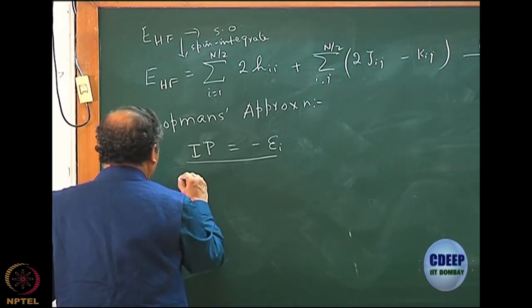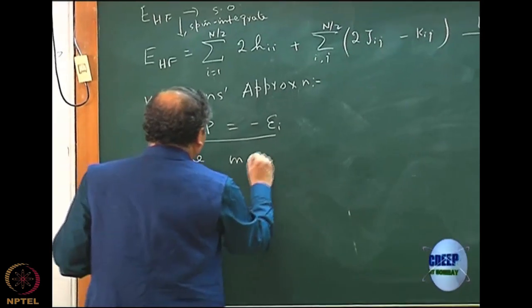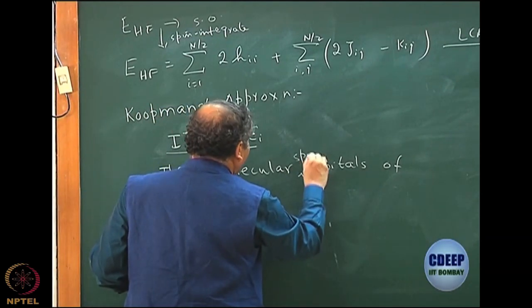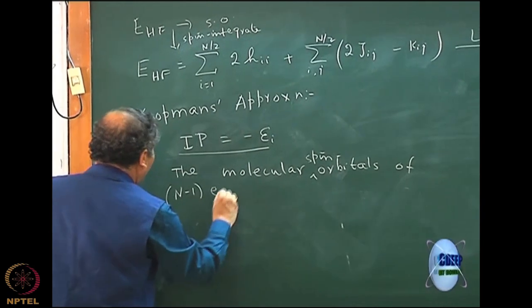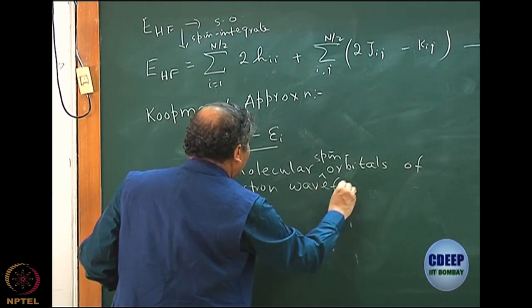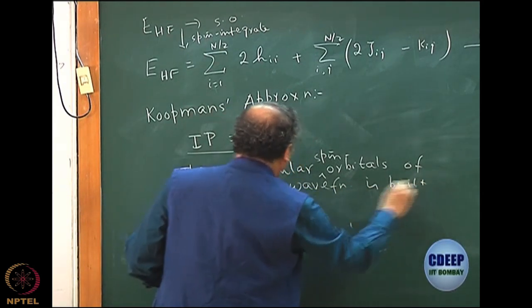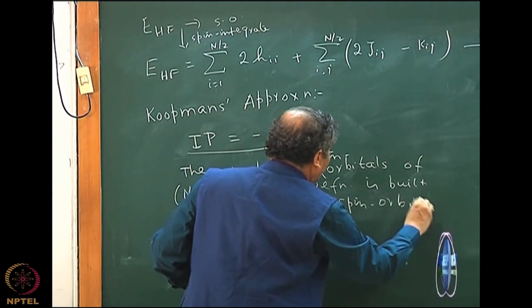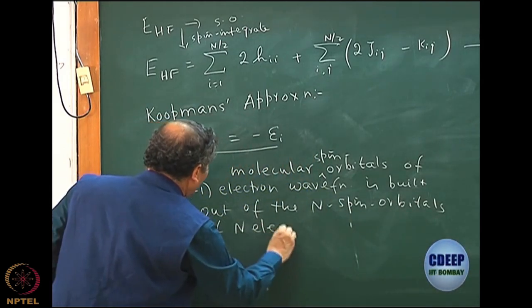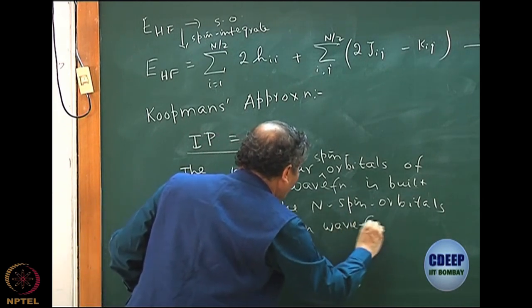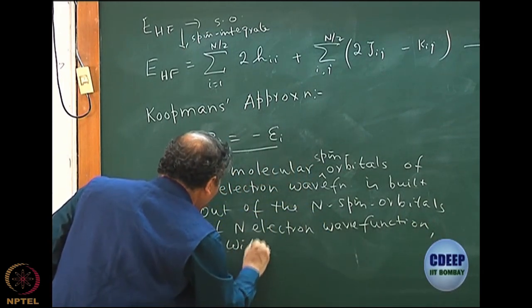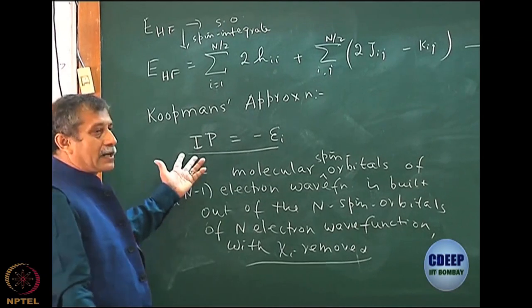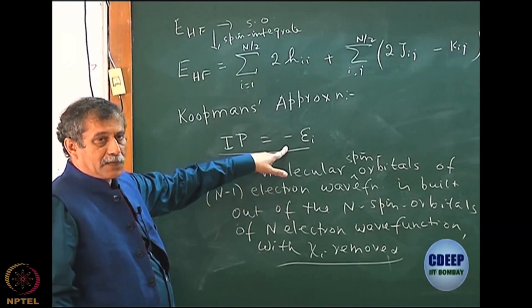Generally, I can write that the molecular spin orbitals of the N minus 1 electron wave function are built out of the N electron spin orbitals of the original problem - the N electron wave function - with just the chi_i removed. So except for that chi_i everything else is there, that is my N minus 1 electron, and the energy difference is only minus epsilon_i.